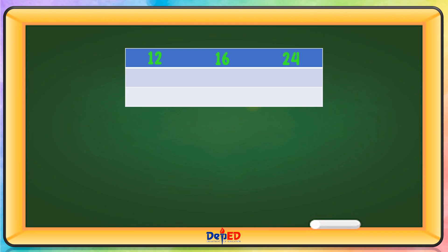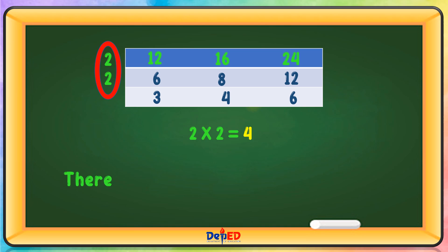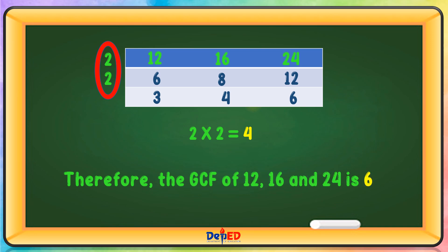The prime number is 2. 12 divided by 2 equals 6, 16 divided by 2 equals 8, and 24 divided by 2 equals 12. Then 6 divided by 2 equals 3, 8 divided by 2 equals 4, and 12 divided by 2 equals 6. Multiply the prime numbers: 2 times 2 equals 4. Therefore, the GCF of 12, 16, and 24 is 4.